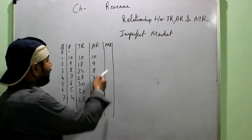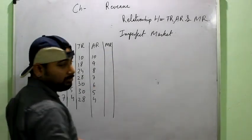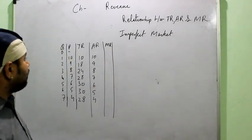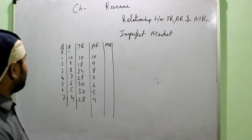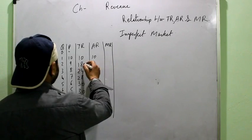So, AR can be calculated by simply putting the formula or it is also equal to price, then the marginal revenue. As we already know that marginal revenue is the change in the total revenue. MR at N is equal to TR at N minus TR at N minus 1.